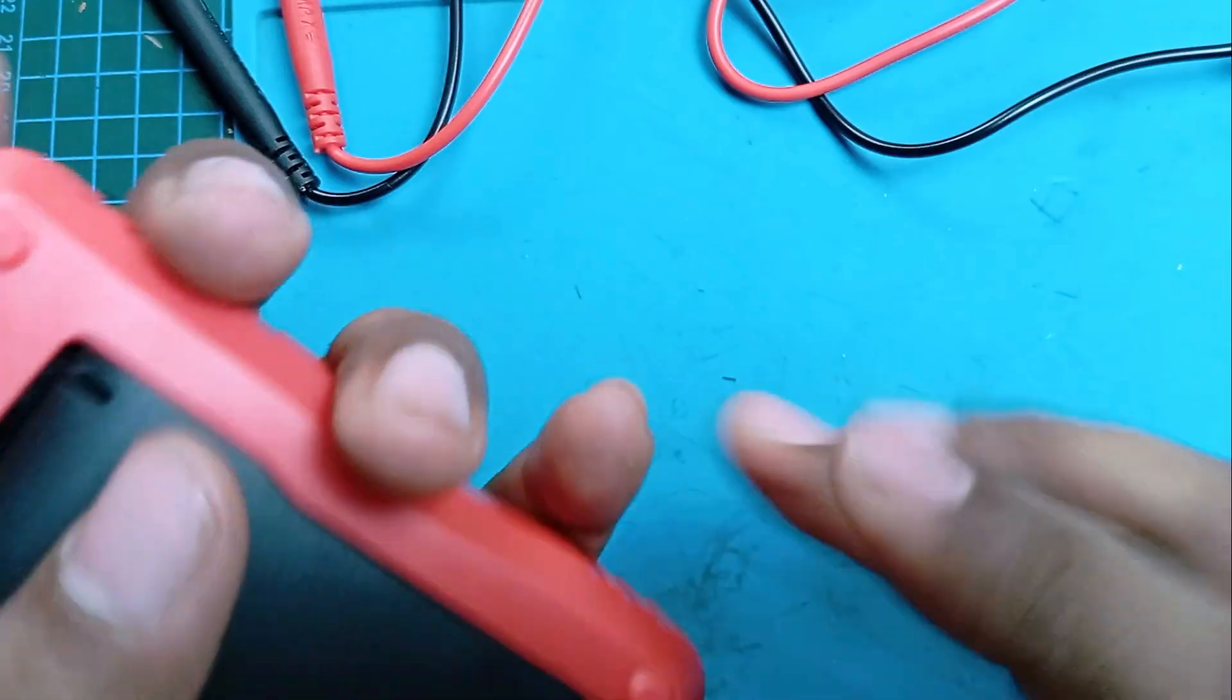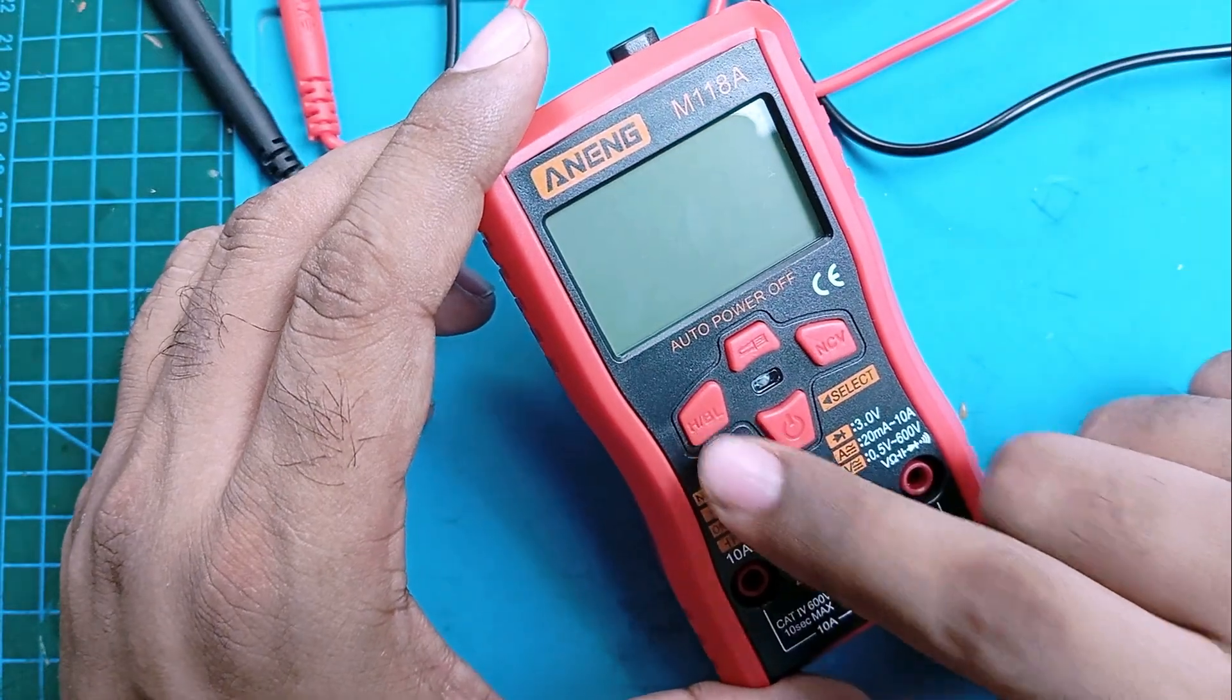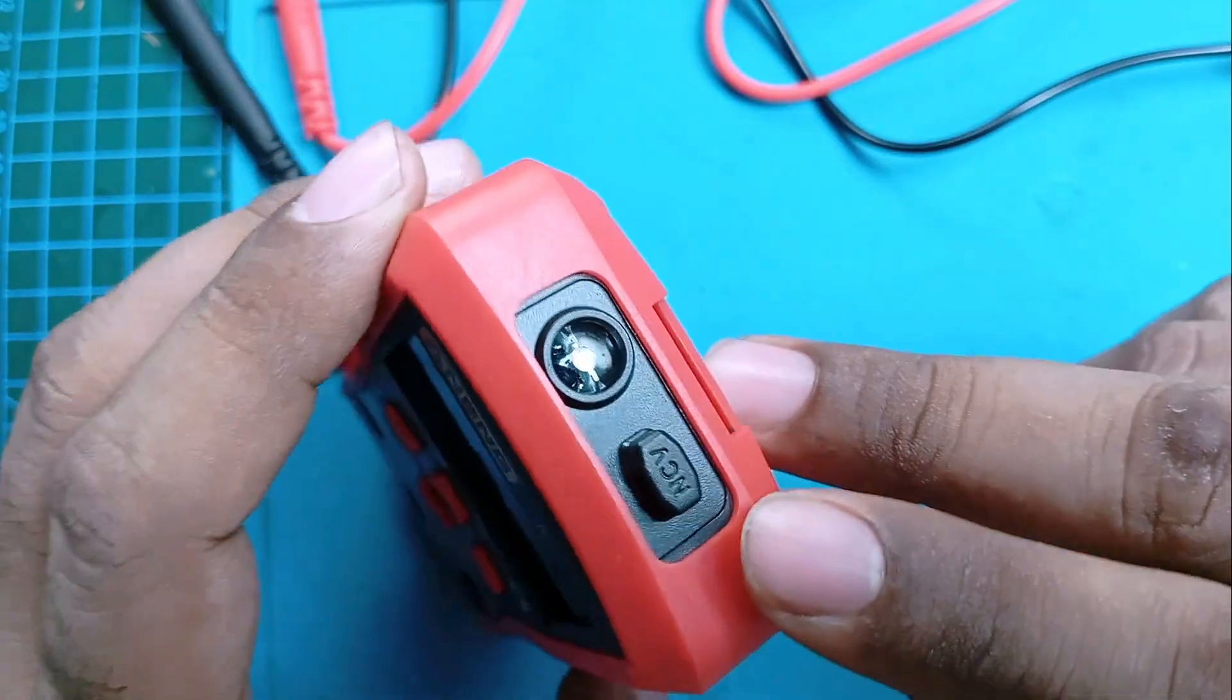And it has a power button, LED button, this one is the hold button, and this is NCP. You will see that the sensor is also named NCV.